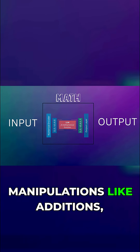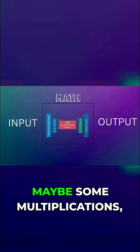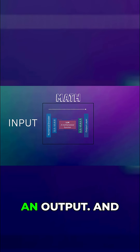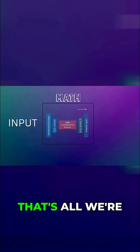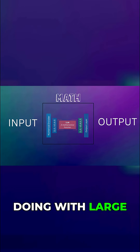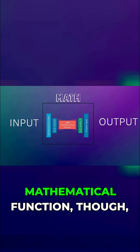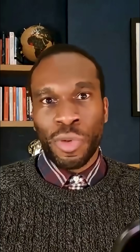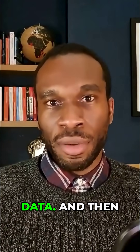There are some mathematical manipulations like additions, maybe some multiplications, and then it returns an output — and that's all we're doing with large language models. The difference with this type of mathematical function, though, is that instead of just writing it out like we did in math class, the mathematical function is learned from data.